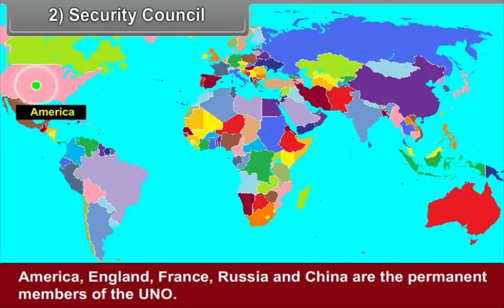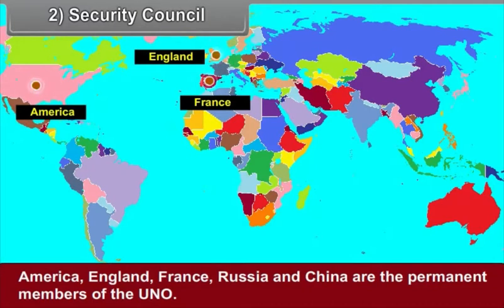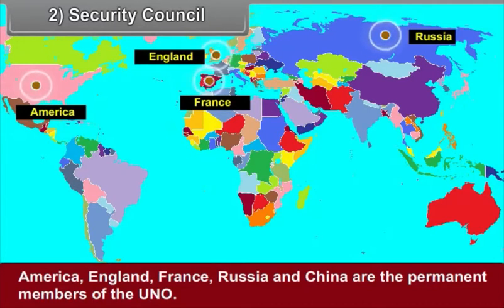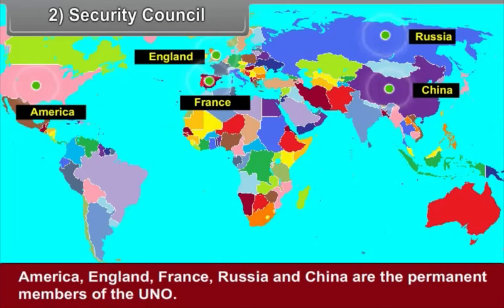America, England, France, Russia, and China are the permanent members of the UNO.